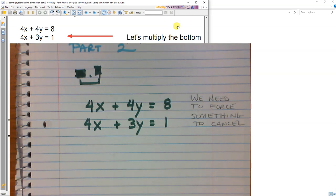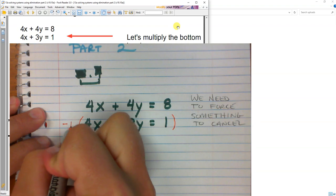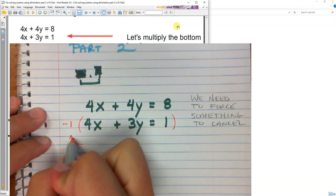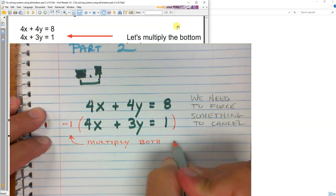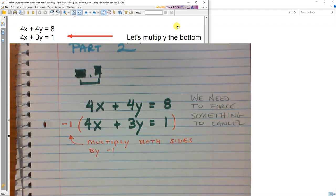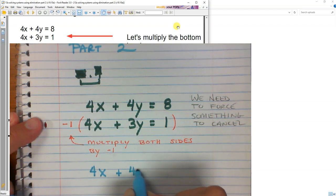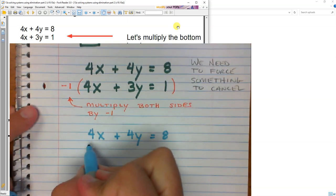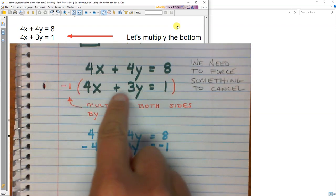So how do I force it? Well, one of my rainbow poster things is that I can multiply both sides of an equation by the same number. What I'm going to do is I'm going to multiply the bottom equation by negative 1. I could do the top equation. So what does that give me? Well, nothing changed with the top equation. That's still 4x plus 4y equals 8. But now the bottom equation is negative 4x minus 3y equals negative 1.